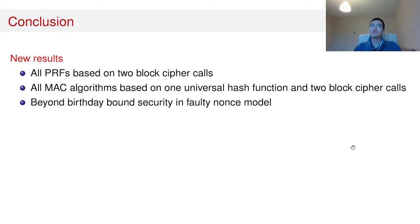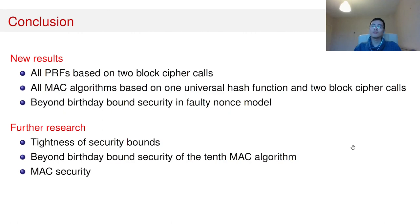In conclusion, in this work we perform an exhaustive search of all PRFs that can be built by two block cipher calls. Based on this result, we perform an exhaustive search for MAC algorithms that can be built from one universal hash function iteration and two block cipher calls. After that, we perform a beyond-birthday-bound PRF security analysis of the constructions in the faulty nonces model. For future work, it would be very interesting to look at the tightness of the security bound, to prove beyond-birthday-bound security of the MAC algorithm based on EDM in the nonce-respecting setting, and to examine MAC security of the given constructions since our analysis was done for PRF security only. Thank you for your attention.